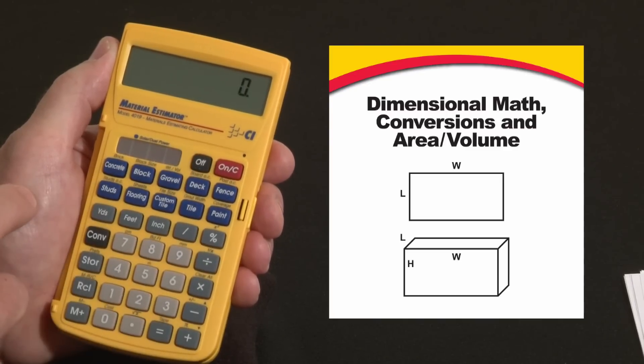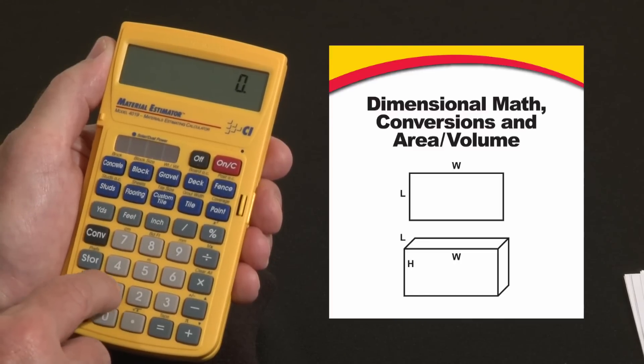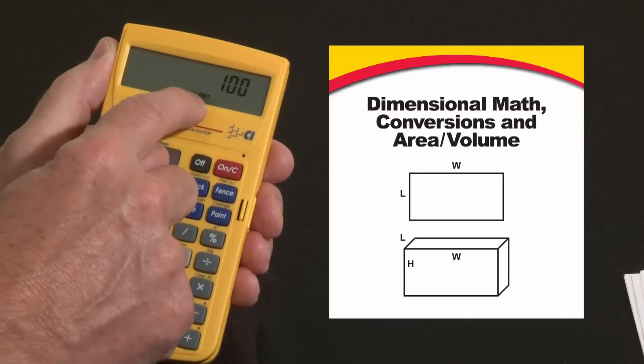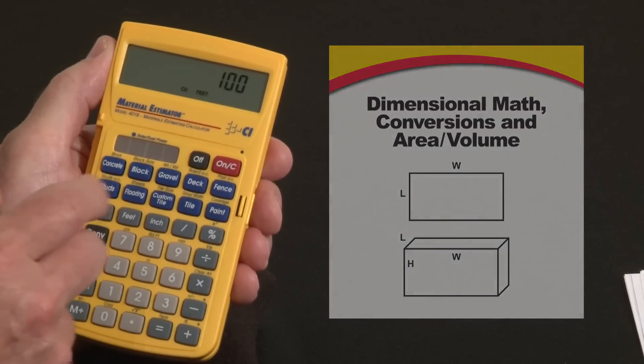You can also enter directly cubic and square area values. Say you knew you had a hundred square feet. You would just enter one hundred feet, feet. Second press shows square feet. Third press shows cubic feet. You can do that with any of the unit bases.